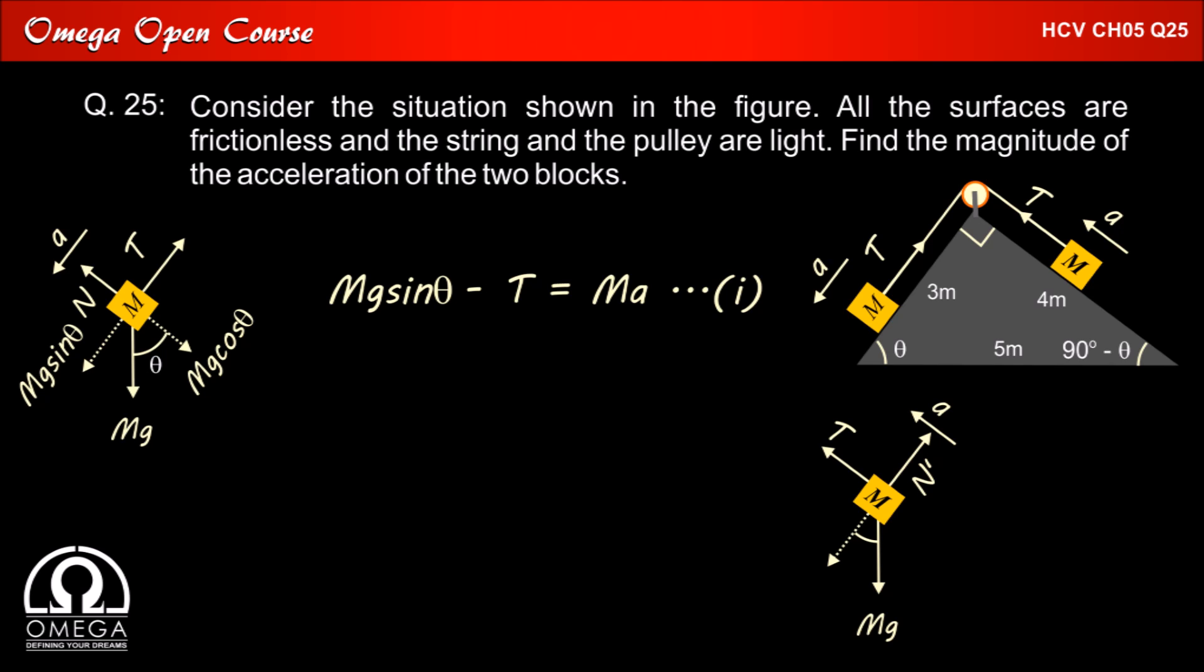Since inclination of the incline on the right is 90 degrees minus theta, the component of gravity perpendicular to the incline will be mg cos(90° - θ) which is equal to mg sin theta. Similarly, component of gravity along the incline is mg sin(90° - θ) that is mg cos theta.